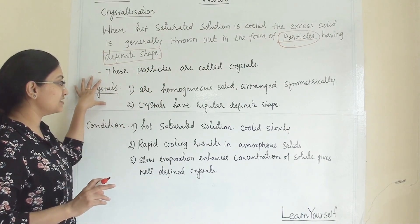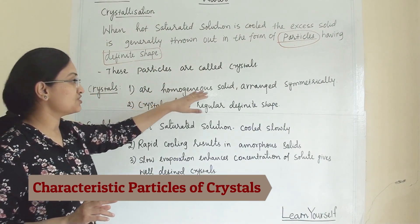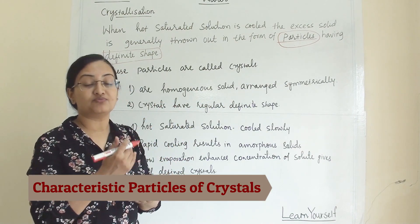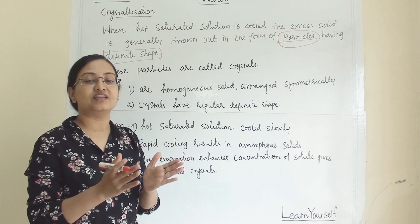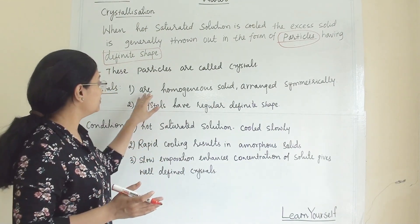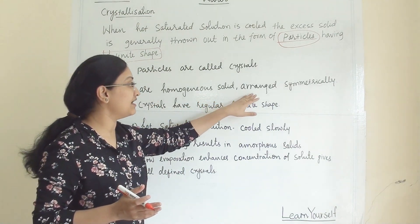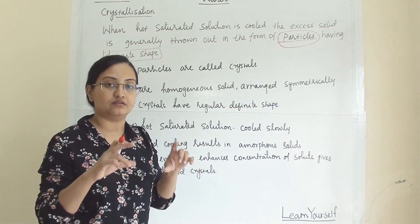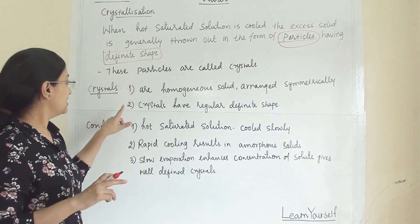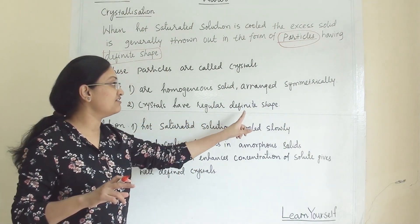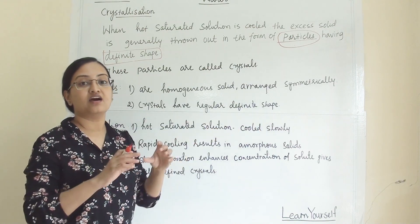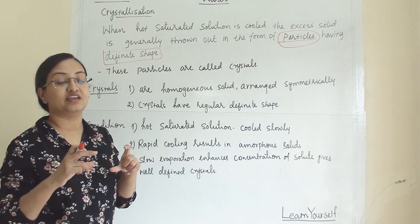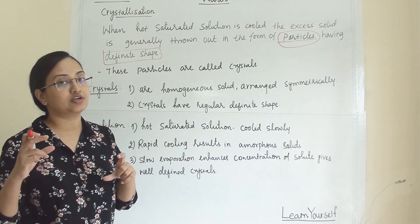Now, what are crystals? Crystals are homogenous solids. All the crystals recovered from the solvent are of the same kind of shape — they are homogenous solids arranged symmetrically in a specific, particular geometrical pattern. Second, crystals have a regular, definite shape. They form a very regular and definite shape and follow one particular geometrical pattern.